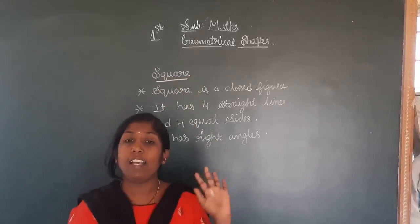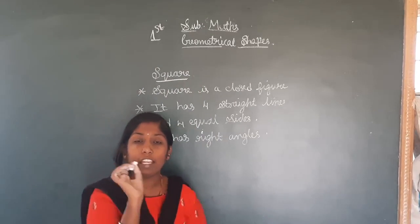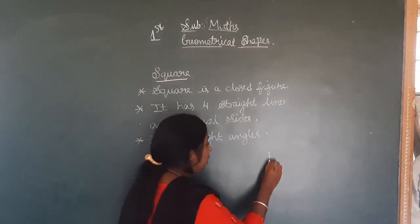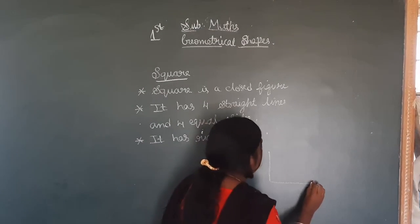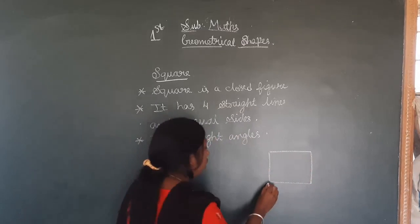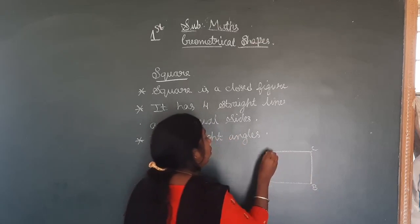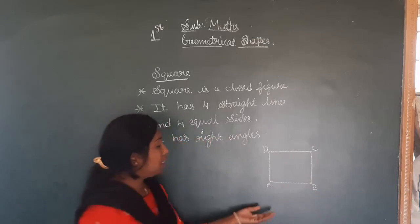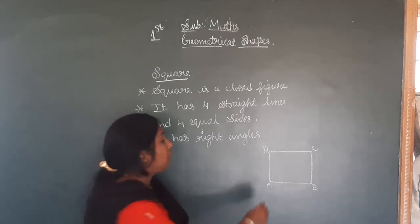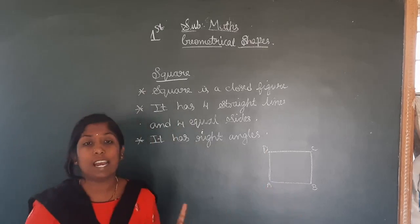Next is square. Square is also a closed shape — closed means when I am starting and ending at the same point. Square is in this form. This is a square. Square has all straight lines — there are no curves. It is made up of straight lines.